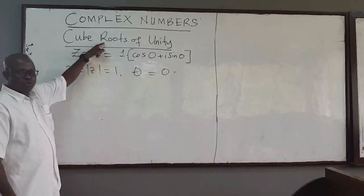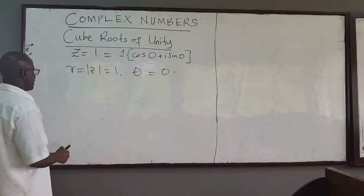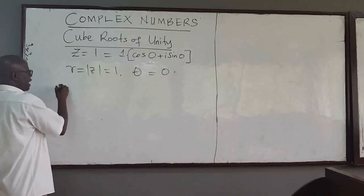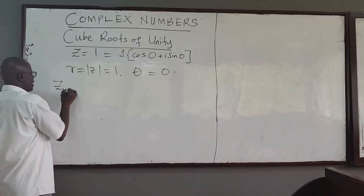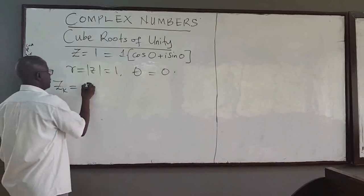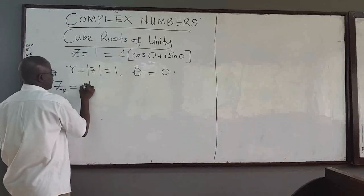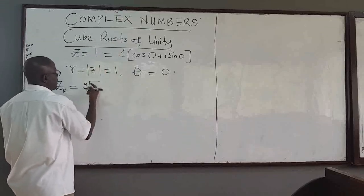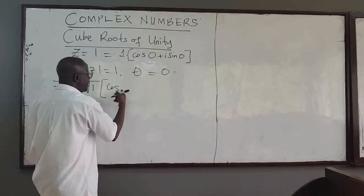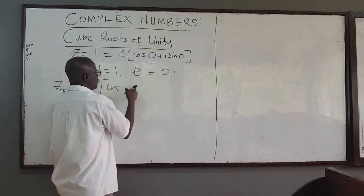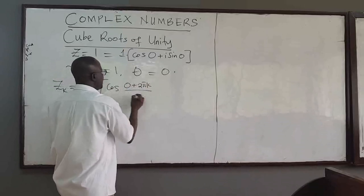To find the k-th roots, we apply the formula from before. Instead of W, we use Z. So Z sub k, or W sub k, would be the n-th roots — here the cube roots, n equals three. And then, since r is one and theta is zero, we have cosine of zero plus two pi k over n, with n equal to three.